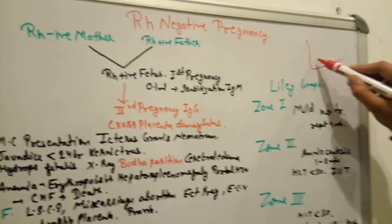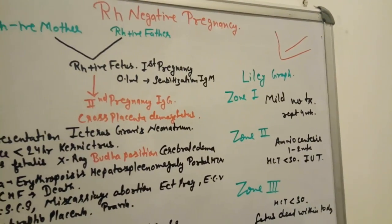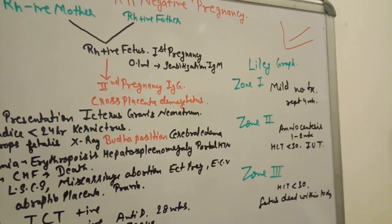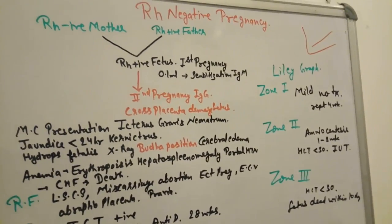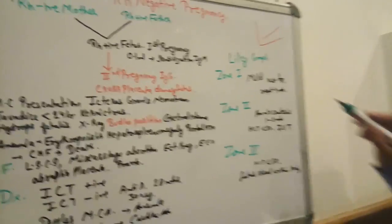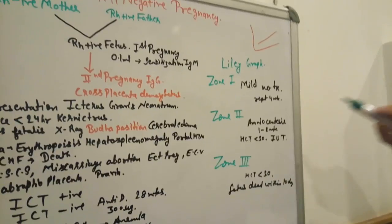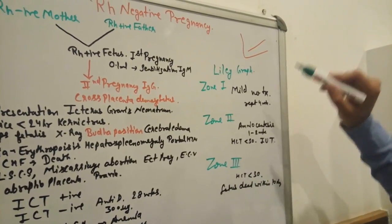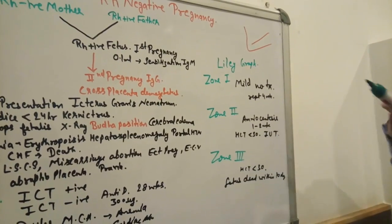Zone 1 - if we see this is Zone 1, there is mild and no severity of this disease. There is no treatment requirement, and we repeat amniocentesis every four weeks.